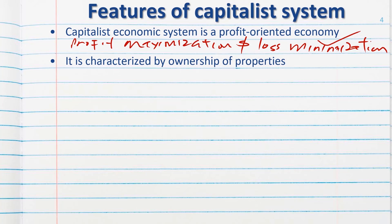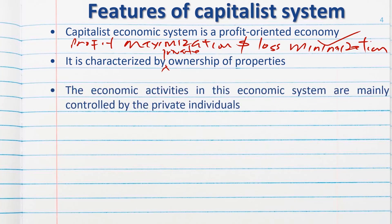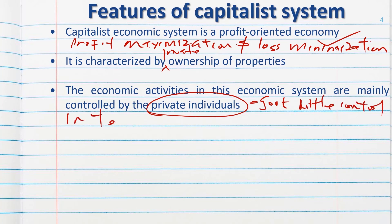Number two, the capitalist economy is characterized by private ownership of properties. The private individual has access to owning private properties. The economic activities in this system are mainly controlled by private individuals, while the government has little control — mainly in terms of security provision.